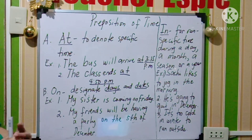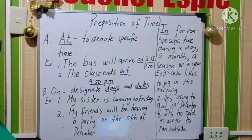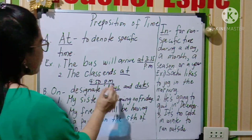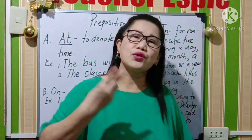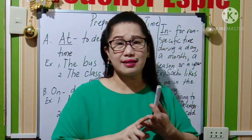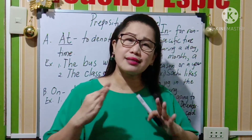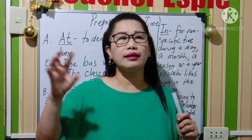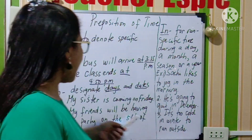Paano naman po gagamitin ang on pagdating sa time? On designates days and dates. Ano po yung days? So we know that there are 7 days in a week: Monday, Tuesday, Wednesday, Thursday, Friday, Saturday, and Sunday. So pwede nyo po yung gagamitin if we are using that in a sentence — kapag on and it denotes day, then gagamit po tayo ng on.